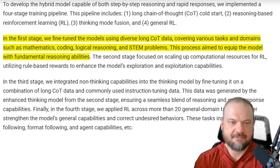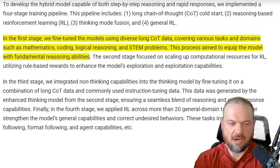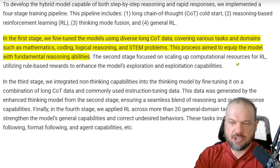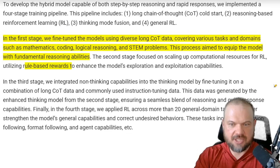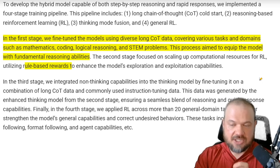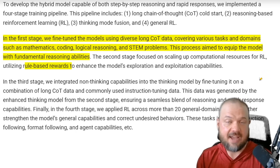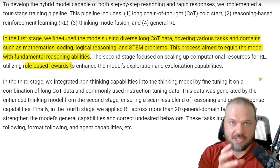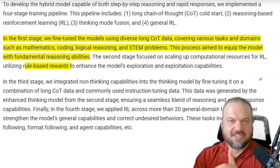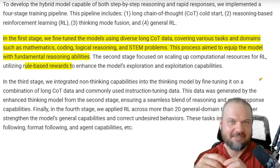In the first stage, they fine-tune the models using diverse long chain-of-thought data, aiming to equip the model with fundamental reasoning abilities. The second stage focused on scaling up computational resources for reinforcement learning, utilizing rule-based rewards to enhance the model's exploration and exploitation capabilities — trying to get it to develop its own problem-solving skills, figure out what works and what doesn't, and identify strategies that get the right answer. It's similar to training a little snake to play the snake game — while training, you let it try everything out and explore.